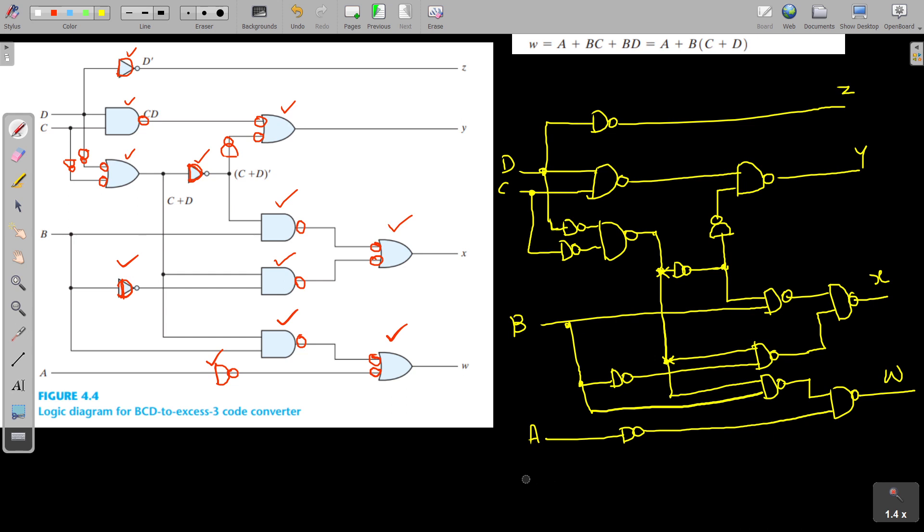Okay. So what it is? It is BCD to XS3 code converter using multiple level NAND gates, NAND gates only. Thank you. Hope you have understood.